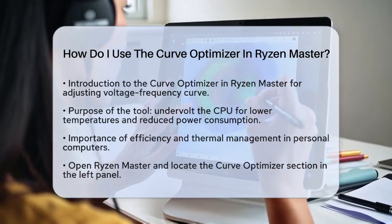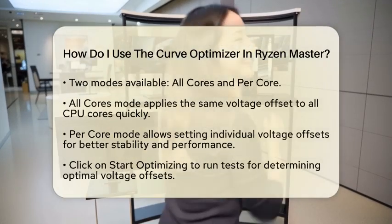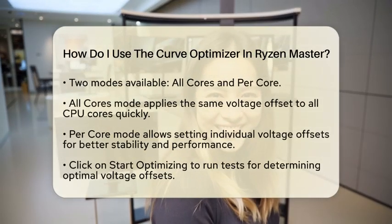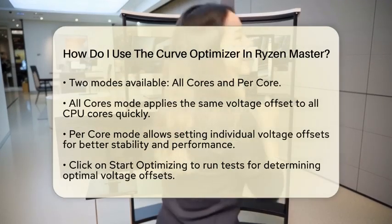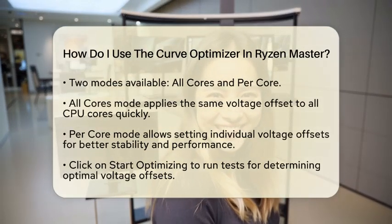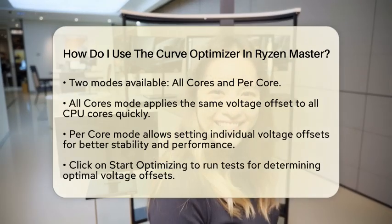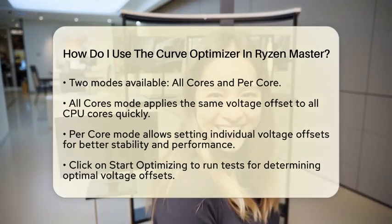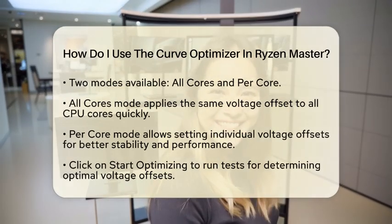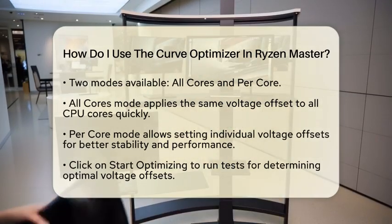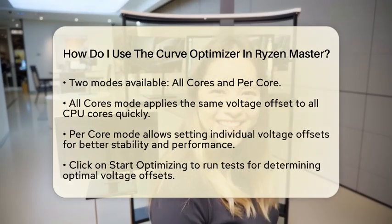Next, you will need to select the Curve Optimizer mode. You have two main choices. The first option is All Cores, which applies the same voltage offset to all CPU cores at once — it is quicker but may not be as precise. The second option is Per Core, which allows you to set individual voltage offsets for each core, leading to better stability and performance since not all cores behave the same way.